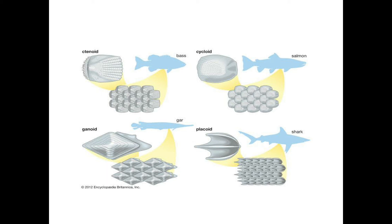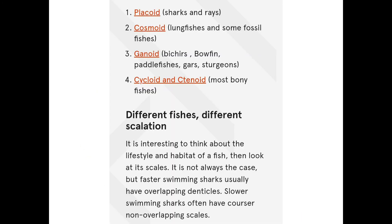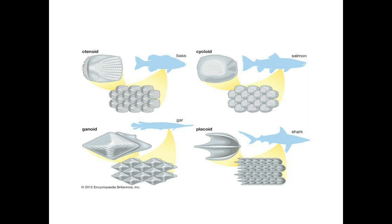Here is a shark which has placoid scales on its body. This is a salmon fish which has cycloid scales — these are the rings and these are the edges. Here is a fish which shows ctenoid scales with small spine-like structures present on the surface of the scales. This is a garfish showing ganoid scales which are rhomboid in shape.